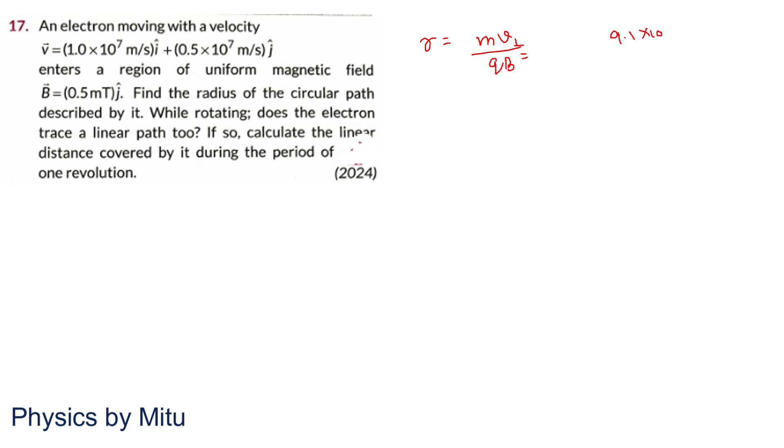9.1 into 10 raised to power minus 31. V perpendicular is 1 into 10 raised to power 7. Charge on electron is 1.6 times 10 raised to power minus 19. Magnetic field is 0.5 millitesla, therefore 10 raised to power minus 3.